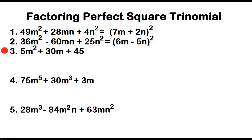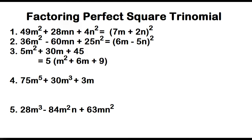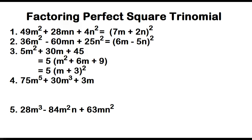Example number three: 5m squared plus 30m plus 45. This is not a perfect square trinomial, but if you factor out the greatest common monomial factor, the other factor is a perfect square trinomial. The greatest common monomial factor is 5, and the other factor is m squared plus 6m plus 9, which is a perfect square trinomial. The square root of m squared is m, and the square root of 9 is 3. The factors are 5 and the square of the quantity m plus 3.